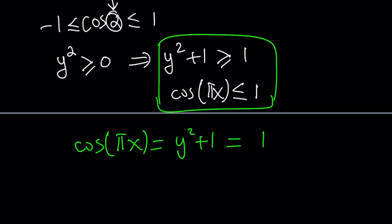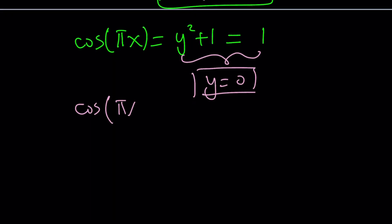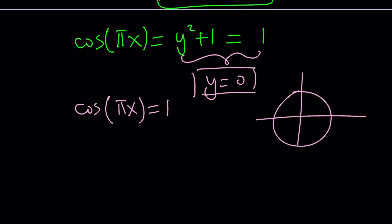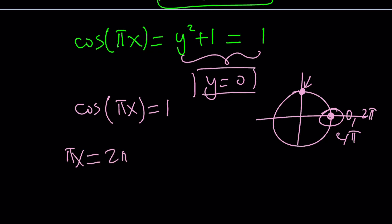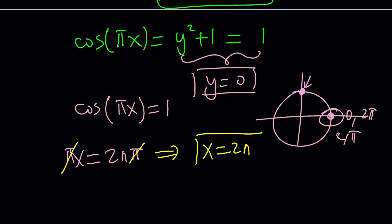Make sense? Now, what does this give us? y is easy to solve — y squared plus 1 equals 1 means y is equal to 0. What about the other one? Cosine of pi x equals 1. Think about which angle gives cosine equal to 1 on the unit circle — that is 0, or 2 pi, or 4 pi. In other words, multiples of 2 pi. So we can write pi x as 2n times pi. Pi cancels out and we end up with x equals 2n, where n is an integer. So x needs to be an even integer and y needs to be 0.